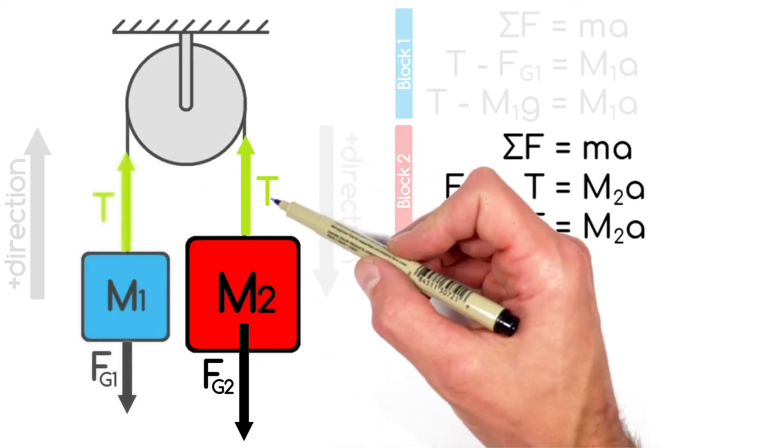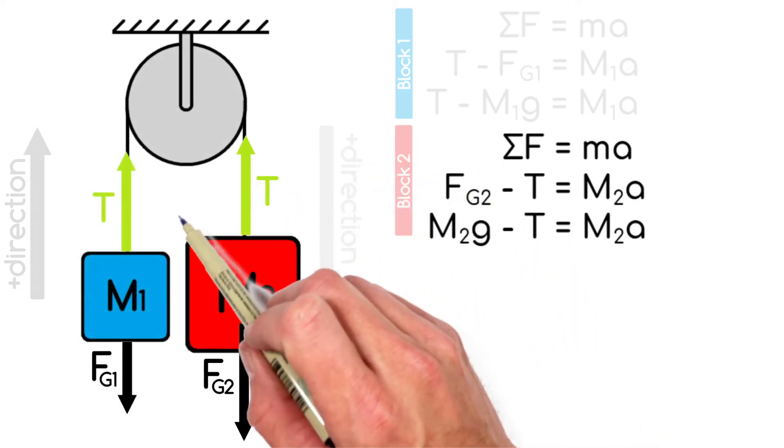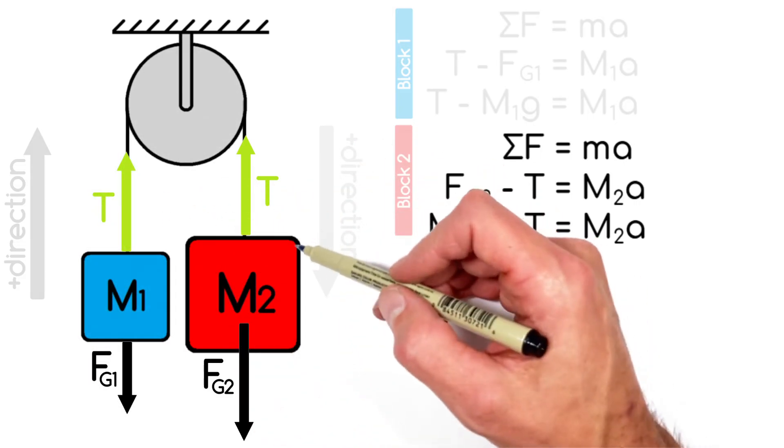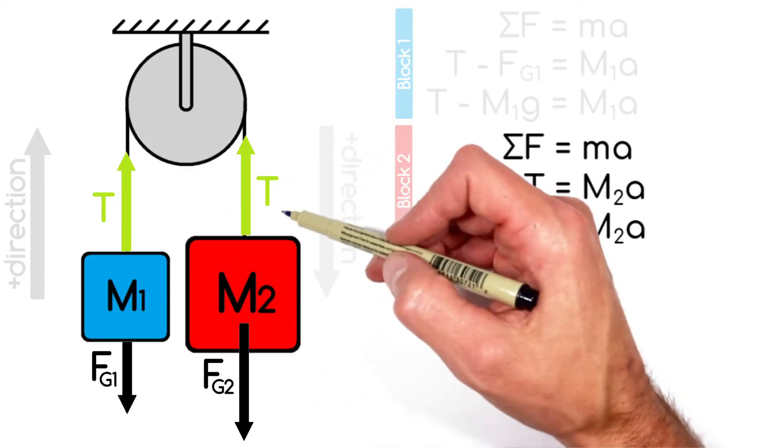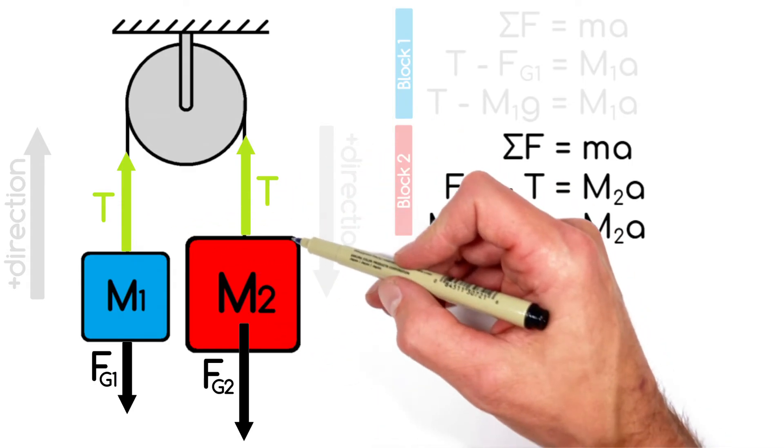And I mentioned earlier, the tension in the string had to be the same between each block. But because these two blocks are tied together, their accelerations are also going to be the same.